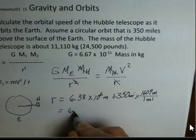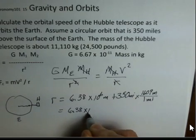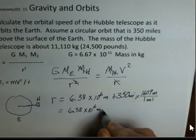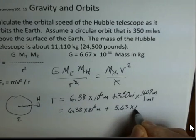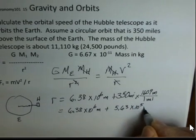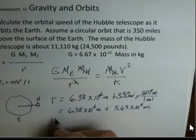And I get 6.38 times 10 to the 6 meters, plus 5.63 times 10 to the 5th meters. You should double-check me on this. Do this calculation on your own calculator.